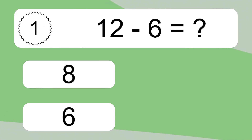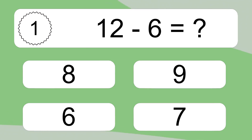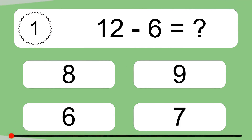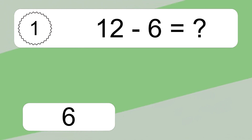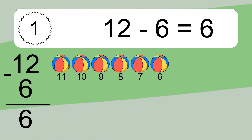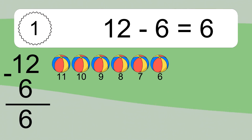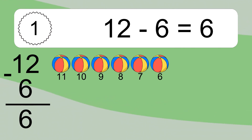12 minus 6 equals what? 12 minus 6 equals 6. Let's count it: 11, 10, 9, 8, 7, 6.